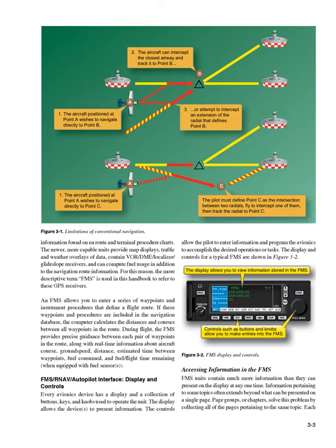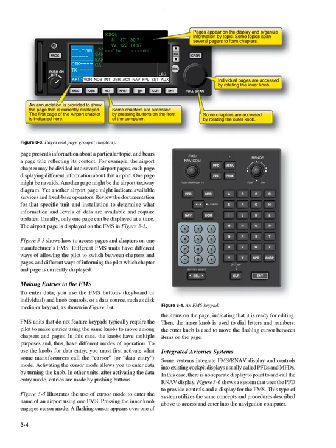Each page presents information about a particular topic and bears a page title reflecting its content. For example, the airport chapter may be divided into several airport pages, each page displaying different information about that airport. One page might be NAVAIDs. Another page might be the airport taxiway diagram. Yet another airport page might indicate available services and fixed base operators.